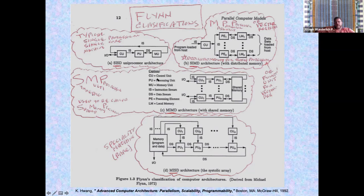As we drill down and design hardware, the control unit will be separate from the data path, even if physically on the same silicon. You have a memory unit — not your optical, magnetic, or solid-state storage, but actually your RAM, dynamic RAM rather than static RAM or caches. And then you have instruction stream, data stream, processing elements, and local memory.